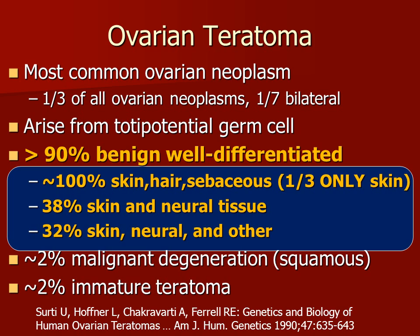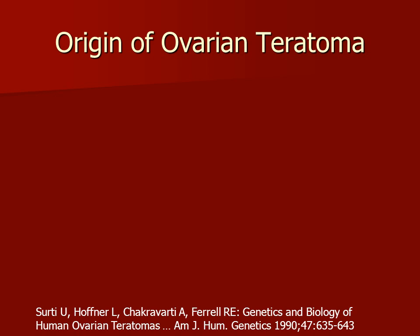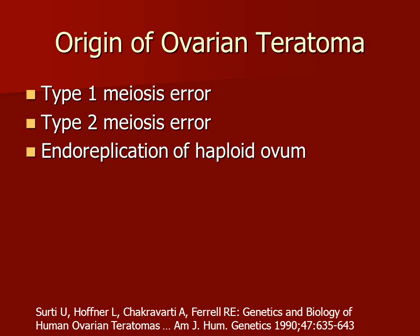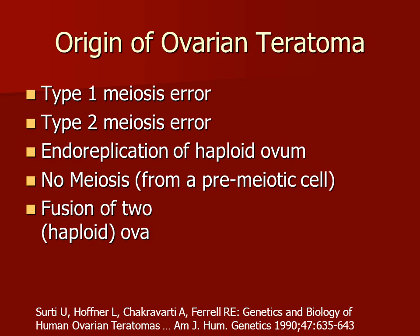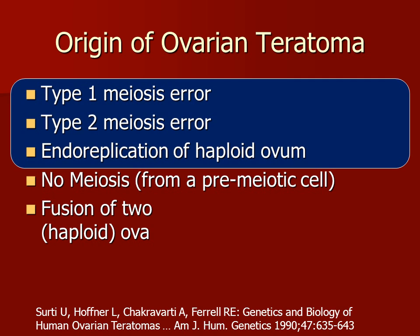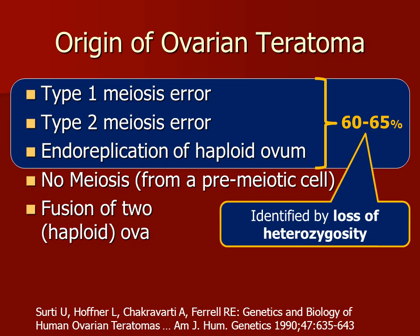The most important things to remember is that the ovarian teratoma is a benign, well-differentiated neoplasm that primarily produces skin and dermal appendages. The ovarian teratoma is thought to arise either from a type 1 meiosis error, a type 2 meiosis error, endoreplication of haploid ovum, arising from a pre-meiotic cell without meiosis, or from the fusion of two haploid ova. The information suggesting the meiotic error is related to the fact that these tumors have a loss of heterozygosity in about two-thirds of cases. So the ovarian teratoma may have identical pairs of chromosomes.